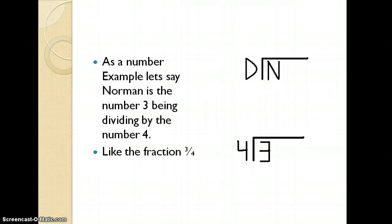As a number example, let's say Norman is the number three, and he's being divided by the number four. So Norman is your dividend. Four is the divisor. Like the fraction three-fourths. And see, three goes into the house, and the four is outside. The donkey is stuck outside the house.